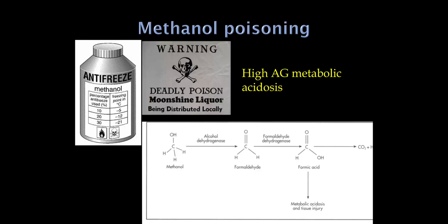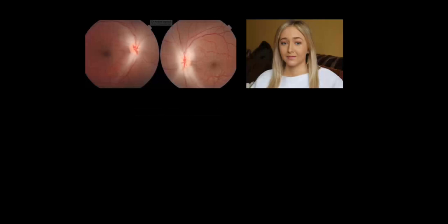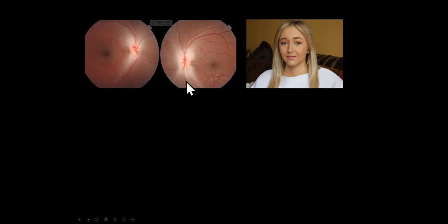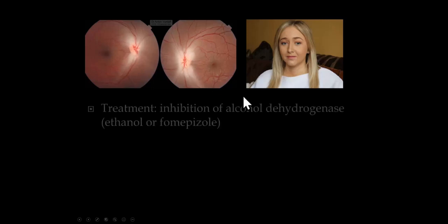Methanol poisoning is damaging to the optic nerve — there's a story of a girl who went to a party and was given home-manufactured moonshine; she is actually blind from this. Over time, we see toxic damage to the optic nerve and optic nerve pallor. This even makes the popular media — it appeared in the show The Walking Dead, where a character warned someone, 'don't drink that, you might go blind.'